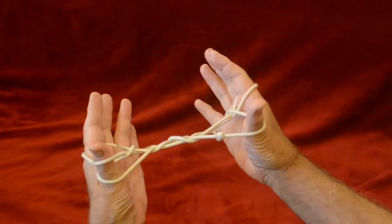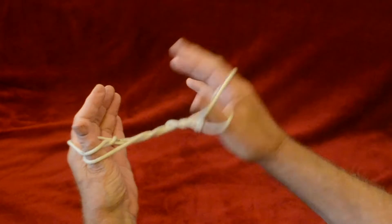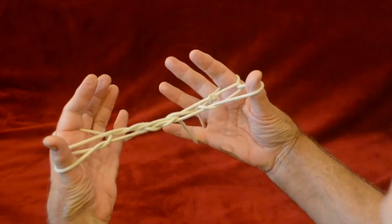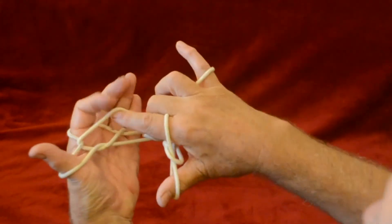Now pick up the near index string right close to the finger and lift it over the thumb. Having done that, you lift the lower thumb loop off and make a little triangle.